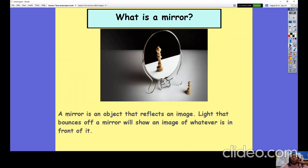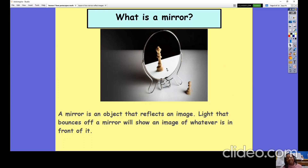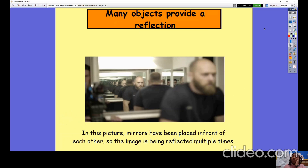What is a mirror? A mirror is an object that reflects an image. Light that bounces off a mirror will show an image of whatever is in front of it. Here I've put a chess piece and it's reflecting the image. Light bounces off the object, then it hits the mirror, the mirror reflects it into our eyes and allows us to see what the reflected image is.